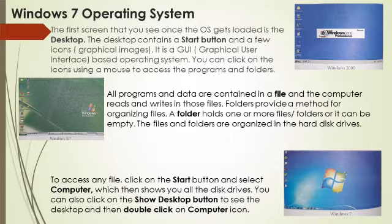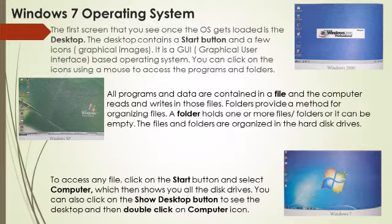It is a GUI or Graphical User Interface based operating system. That means you do not have to give commands by typing text from the keyboard only, but you can click on the icons using a mouse to access the programs and folders. All programs and data are contained in a file and the computer reads and writes in those files. Folders provide a method for organizing files. A folder holds one or more files or folders, or it can be empty. The files and folders are organized in the hard disk drives.